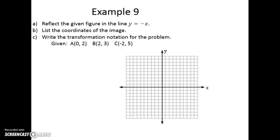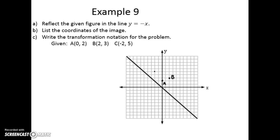The last reflection we'll look at is across the line y = -x. That's the same diagonal line, just going the other direction. Let's plot these points: a is at (0, 2), b is at (2, 3), and c is at (-2, 5).